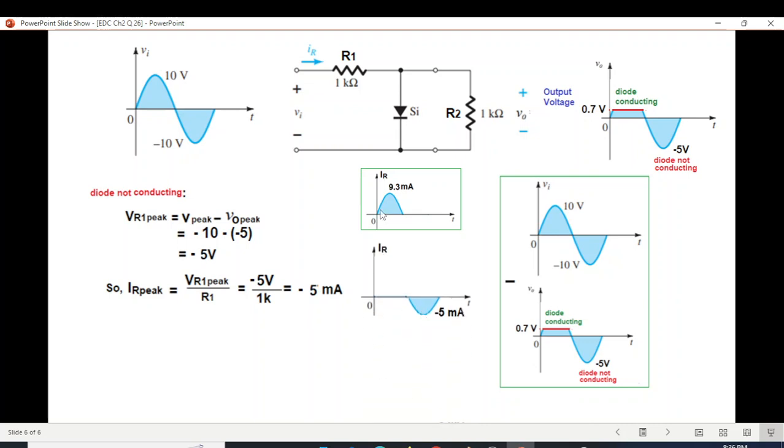And the net result is just we redraw the two parts. So the complete current diagram will be like this, 9.3 and minus 5 milliampere. So I hope you have been able to follow this. Please let me know through your comments. Thank you.